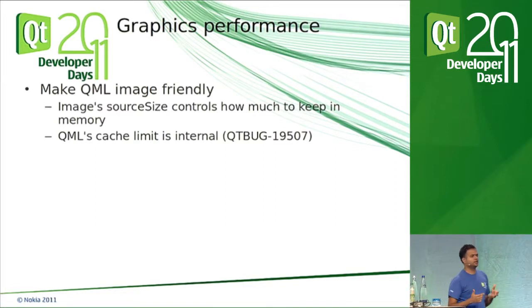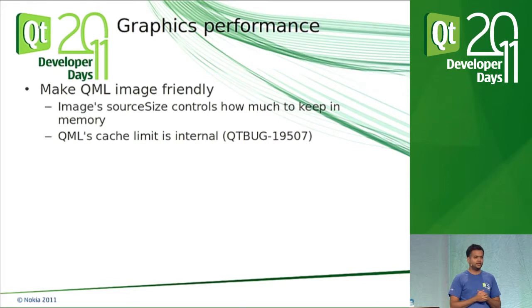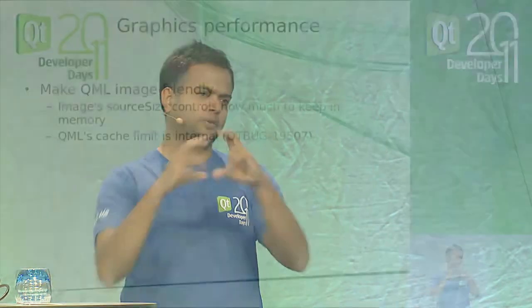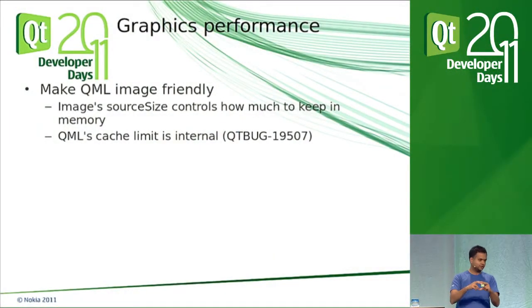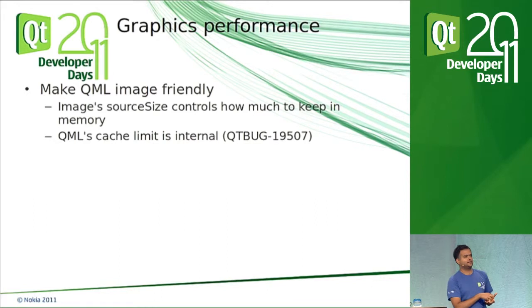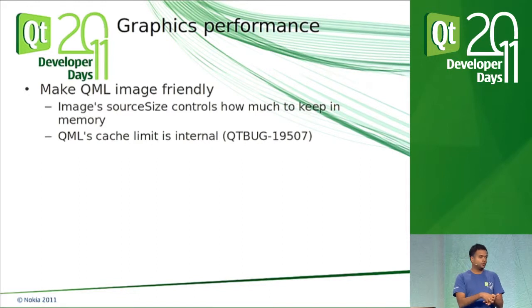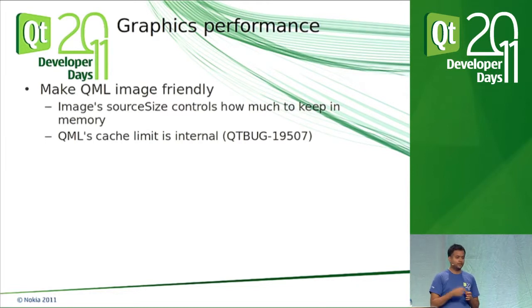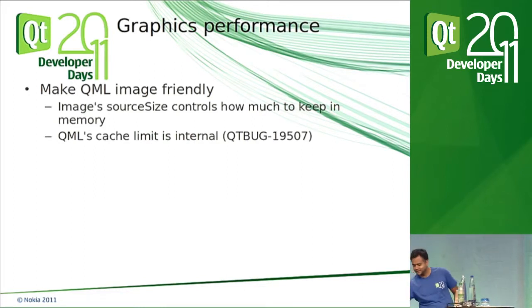To get Qt Media Hub running on many targets, we learned to make your UI as image-friendly as possible. Use everything as Pixmap because they are readily acceleratable. You can control the size of the image QML loads into memory using the sourceSize property — if you have large images but only need a small one, set sourceSize to the small size. Just like QPixmapCache, QML has its own image cache. Unfortunately this image cache size is not configurable — there is no public API for it. You'd have to modify Qt yourself. There is an open bug for it, so if you care, vote on it.